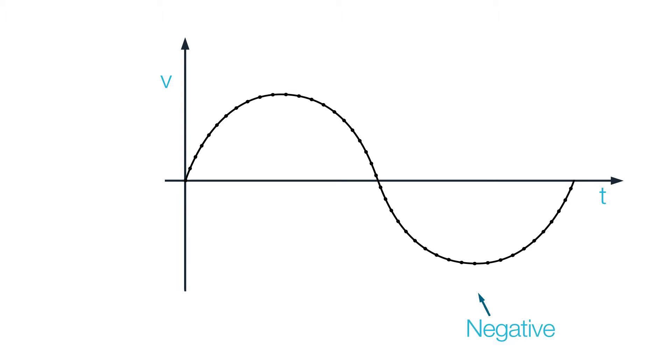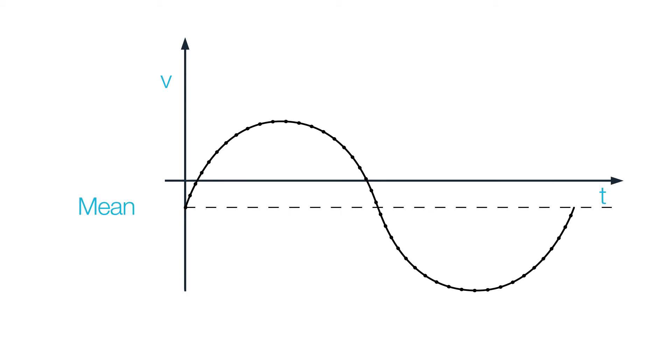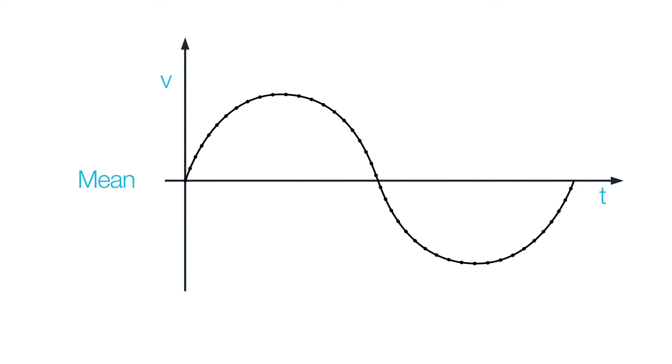If a signal is as negative as it is positive, that is, if it's symmetrical around zero, the mean value will be zero. If it's more positive, then the average will be positive, and vice versa. So the mean value can be used to evaluate the symmetry of a waveform and check for any DC offset.